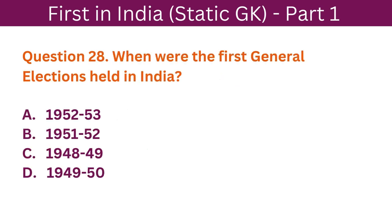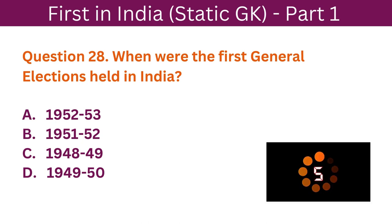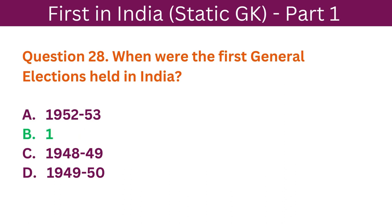Question 28: When were the first general elections held in India? A. 1952-53. B. 1951-52. The correct answer is B. 1951-52.